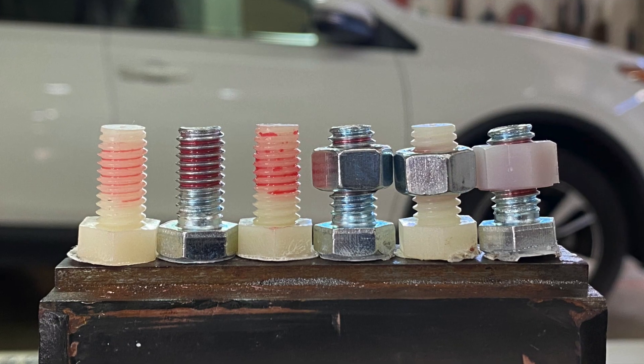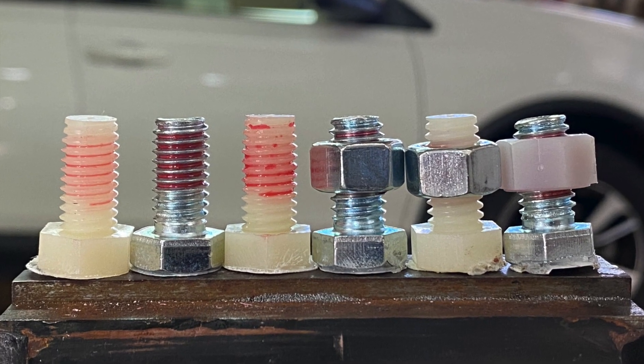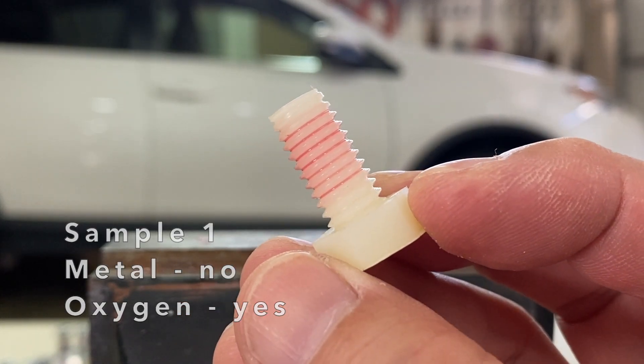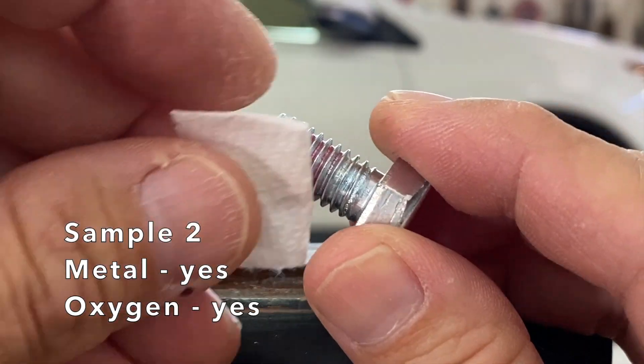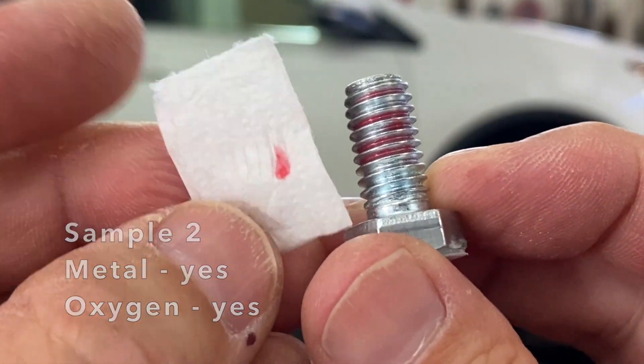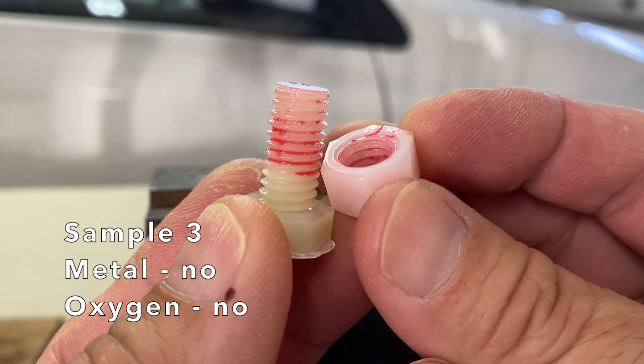Let's take a closer look at the samples. Sample 1 did not cure and was easily wiped off. Sample 2 also did not cure. If I dig my fingernail in, it wipes clean. Sample 3 did not cure and the nut was easily removed.